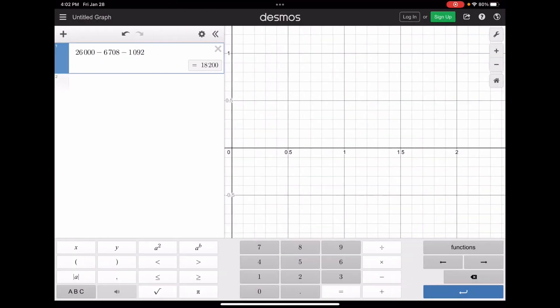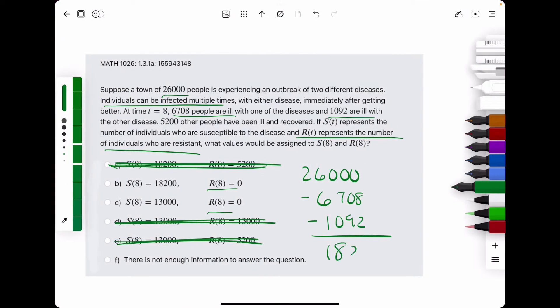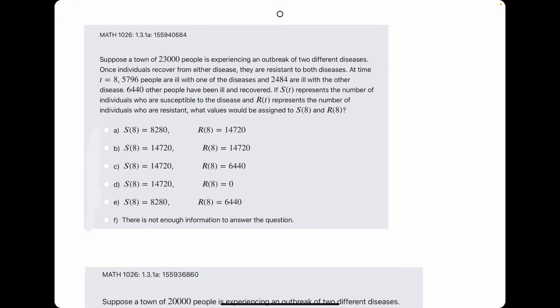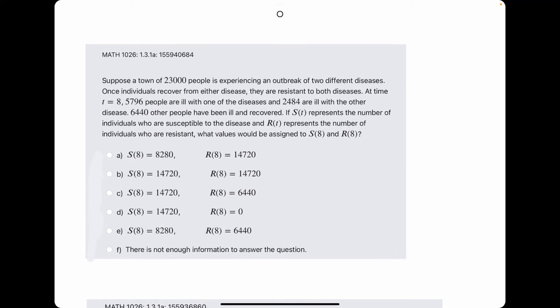Perfect. Alright, so we have 18,200, which is one of the answers. It looks like B is our answer. So, break out the eraser. We see B is our answer. Alright, let's jump to number 3, or example 3.